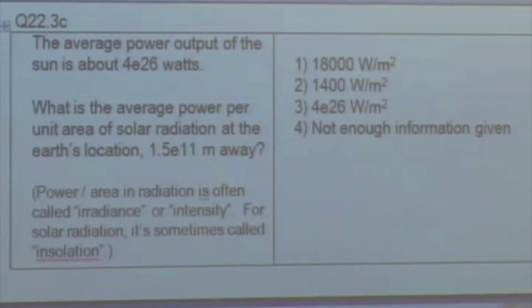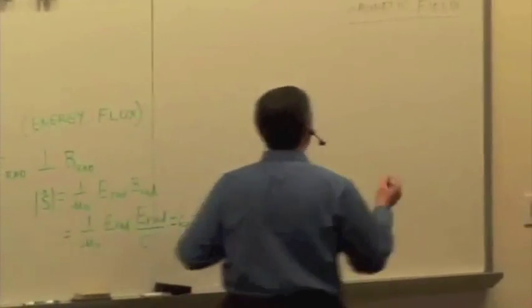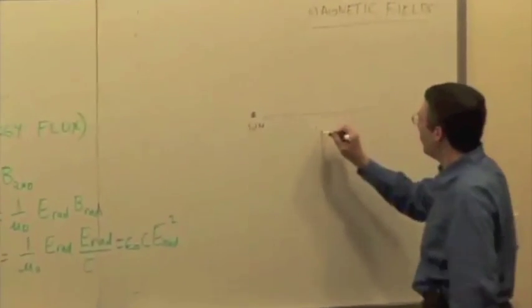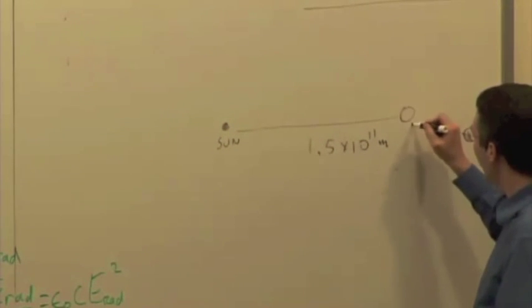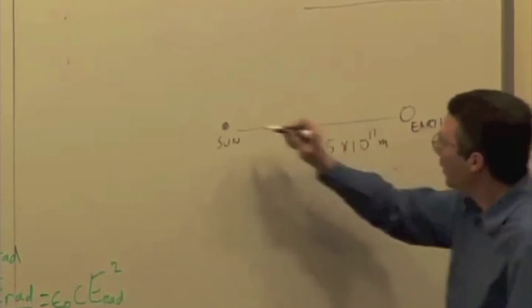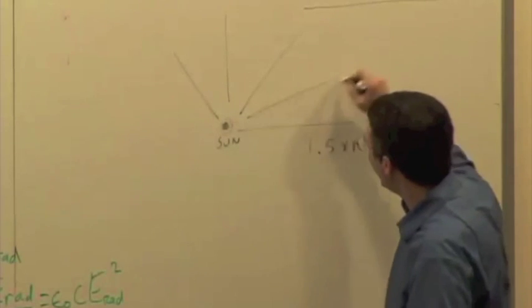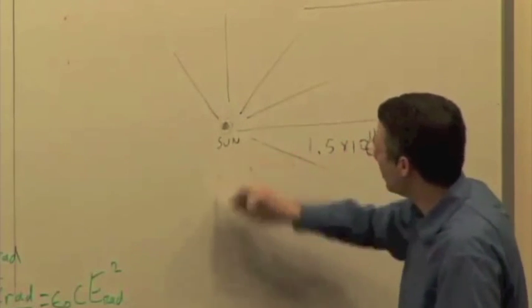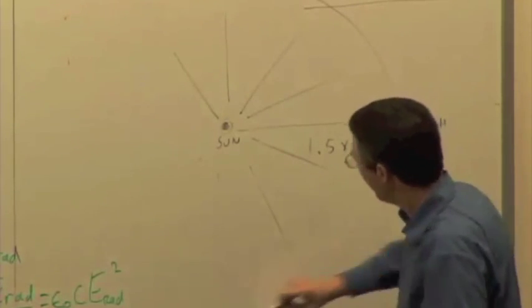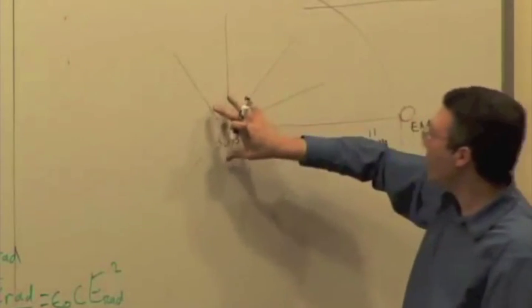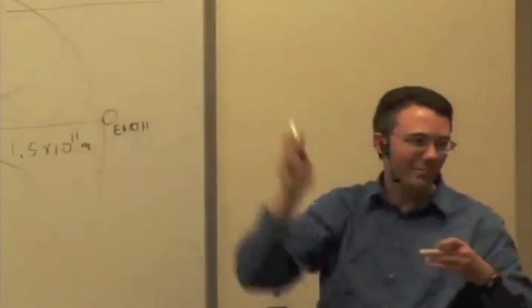I'll draw a little diagram that might help. So here's the sun, 1.5 times 10 to the 11th meters away is the Earth, which is where we're interested in. And the sun's energy is being delivered in all directions. So after you wait a certain amount of time, a pulse of energy from the sun will be spread out over, think about it.